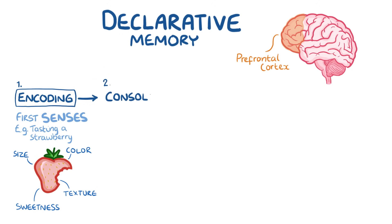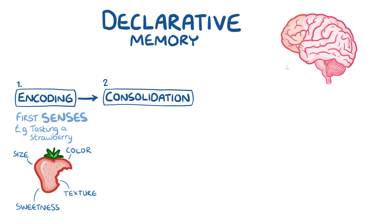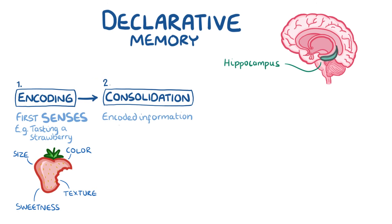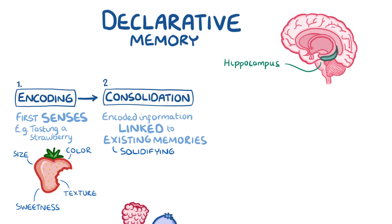The second stage is consolidation. Consolidation occurs in the hippocampus, which is deep within the temporal lobes. In consolidation, the encoded bits of information — like sweetness, size, and texture of the strawberry — are linked up to existing memories. Think of consolidation as solidifying the memory. Comparing that information about the strawberry with memories you already have, like eating a raspberry or a blueberry, helps to determine where you put the new information in your memory. When you consolidate a memory, you are organising it in a way that would be easier to recall.